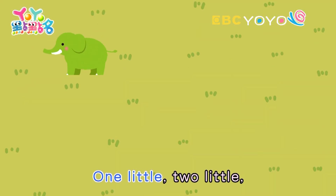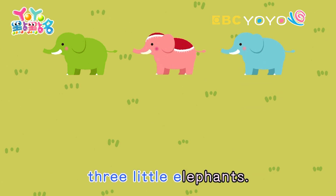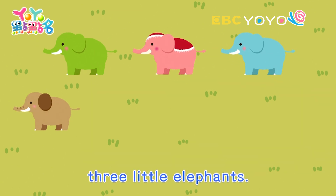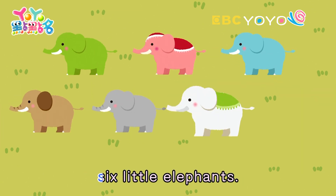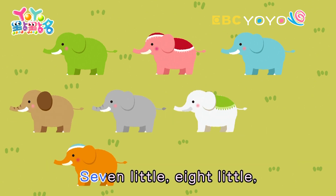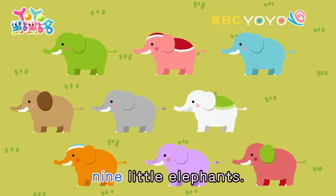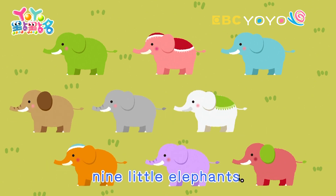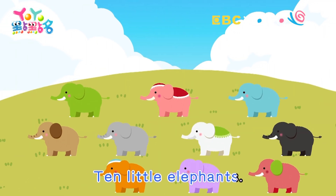One little, two little, three little elephants. Four little, five little, six little elephants. Seven little, eight little, nine little elephants. Ten little elephants.